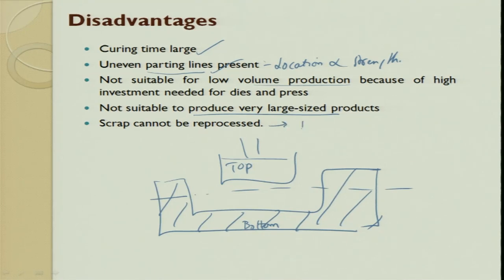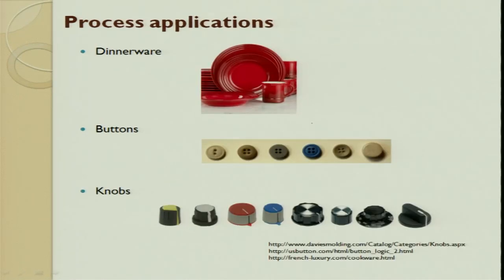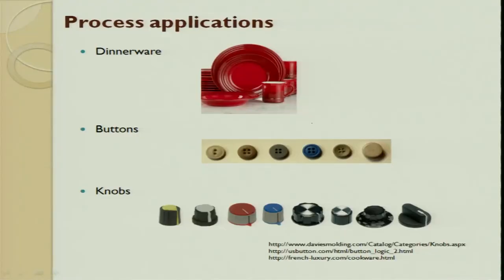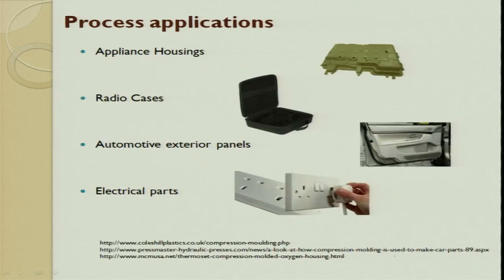When using thermoset, any scrap produced cannot be reused. Applications of compression molding include buttons (with internal decorative fibers), dining wares, knobs, large machine covers, suitcases, automobile exterior panels, and electrical parts such as plug point fixtures. This process is very commonly used and has a wide range of applications.